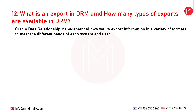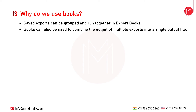The next question is: what is an export in DRM and how many types of exports are available? Oracle Data Relationship Management allows you to export information in a variety of formats to meet the needs of each system and user. Multiple exports can be grouped and run together using books from the Export task on the home page. You can create, open, and manage exports and books, opening multiple exports in separate tabs, but only one export can be focused on at a time. There are basically 11 types of exports available in DRM. Saved exports can be grouped and run together in export books, enabling a set of commonly used exports to be executed with one action. Books can also combine the output of multiple exports into a single output file.